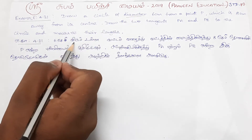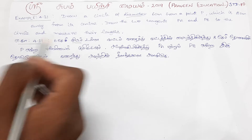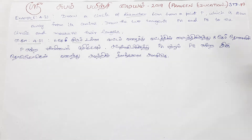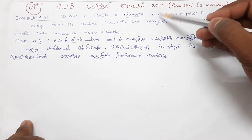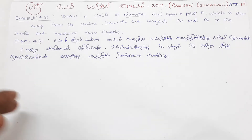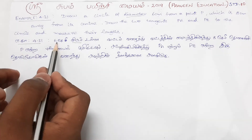The diameter is 6cm. Diameter equals 2R, so the radius is 3cm. The width — that is, the diameter — is 6cm.